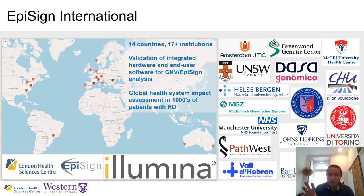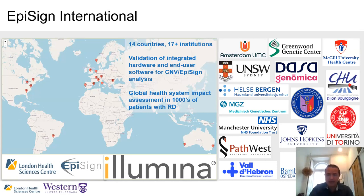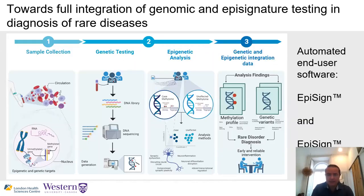This international project will last about three years, testing the integrated copy number methylation array through labs worldwide along with cloud-based data analytics software. The goal is to eventually assess methylation profiles simultaneously with genetic assessment — useful both as a screen and as an augmentation to genomic sequencing approaches.